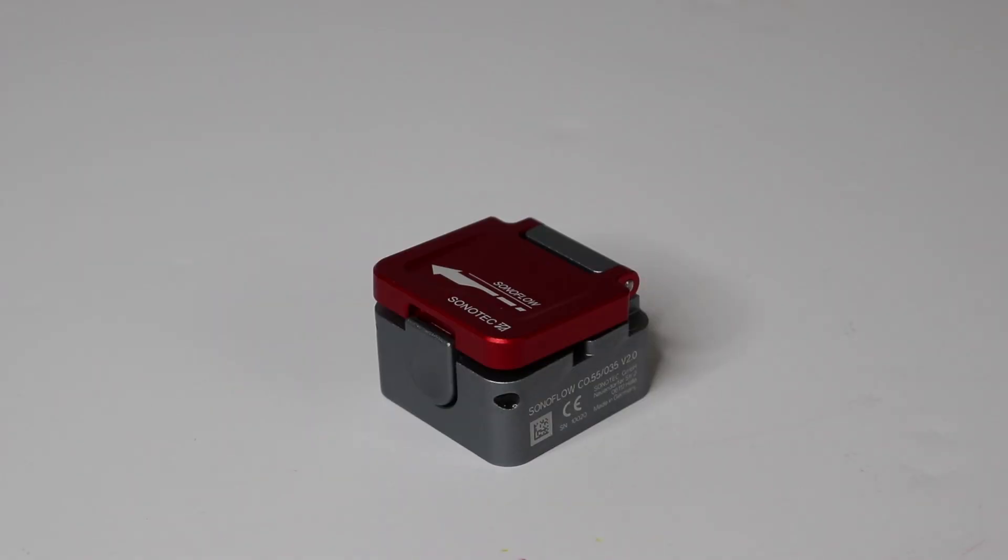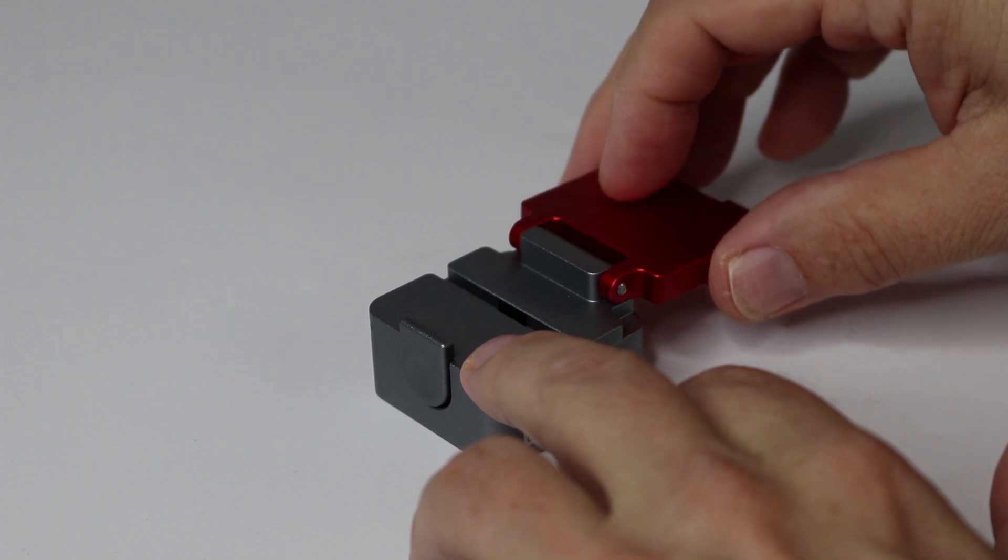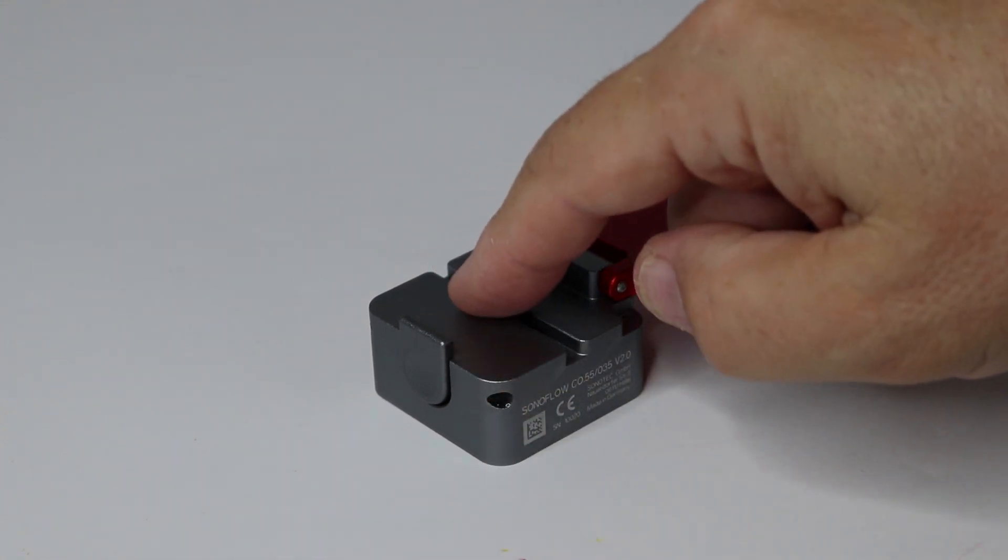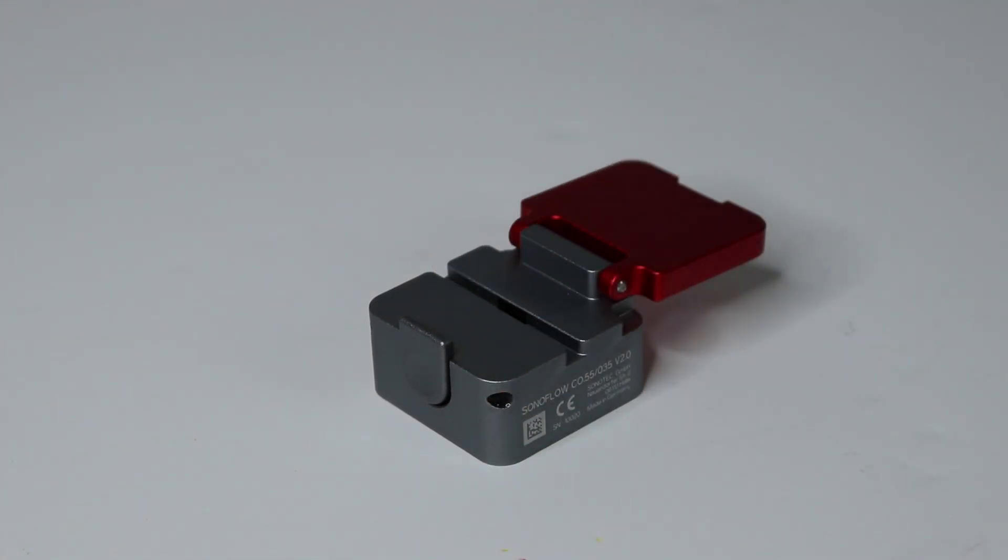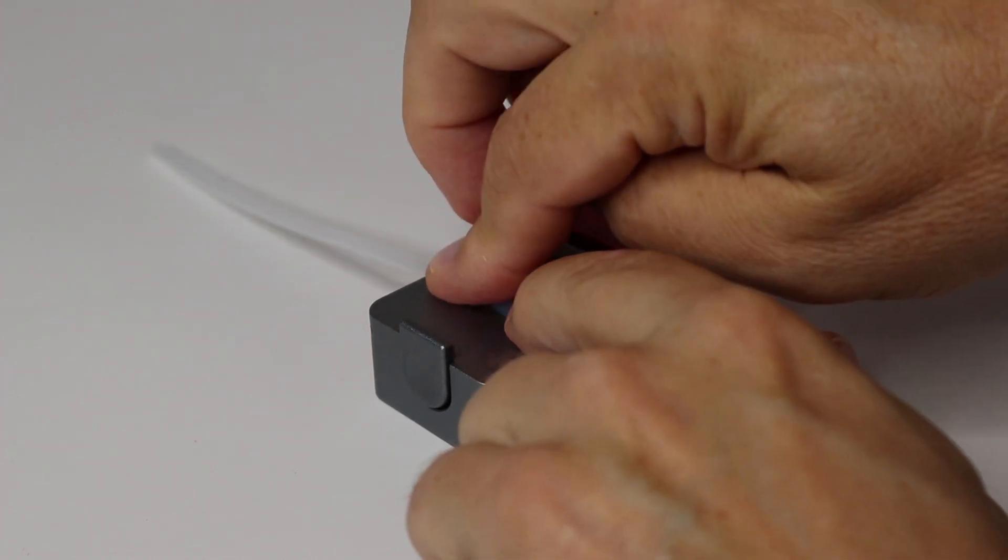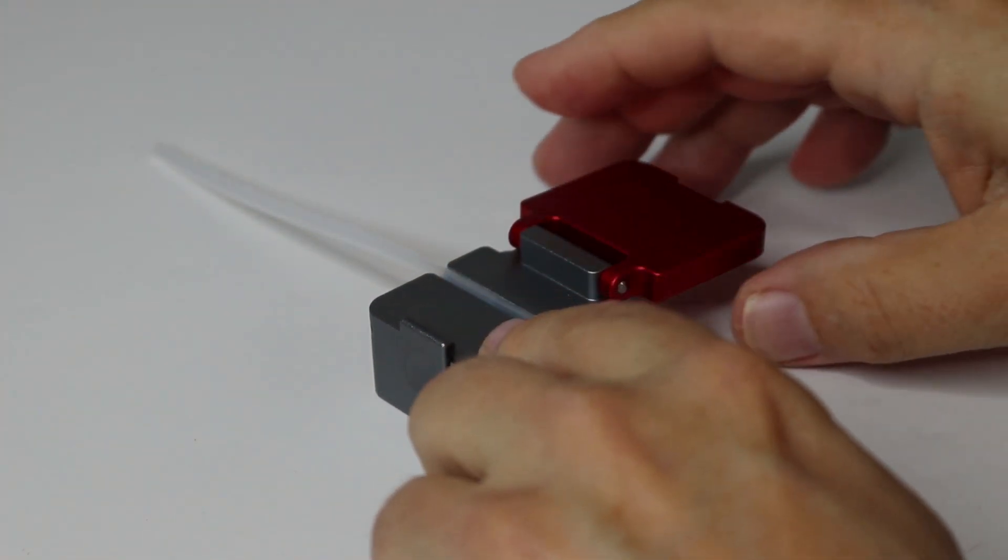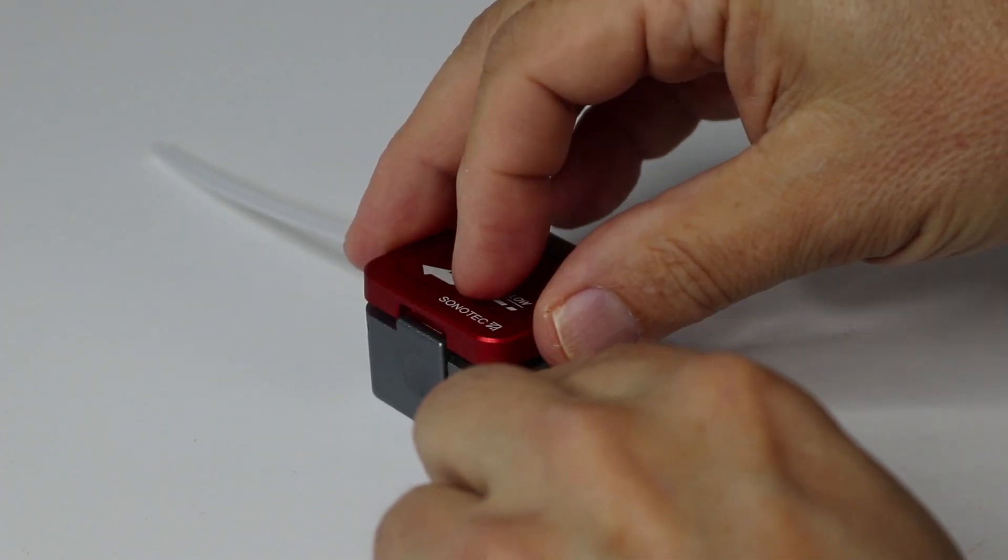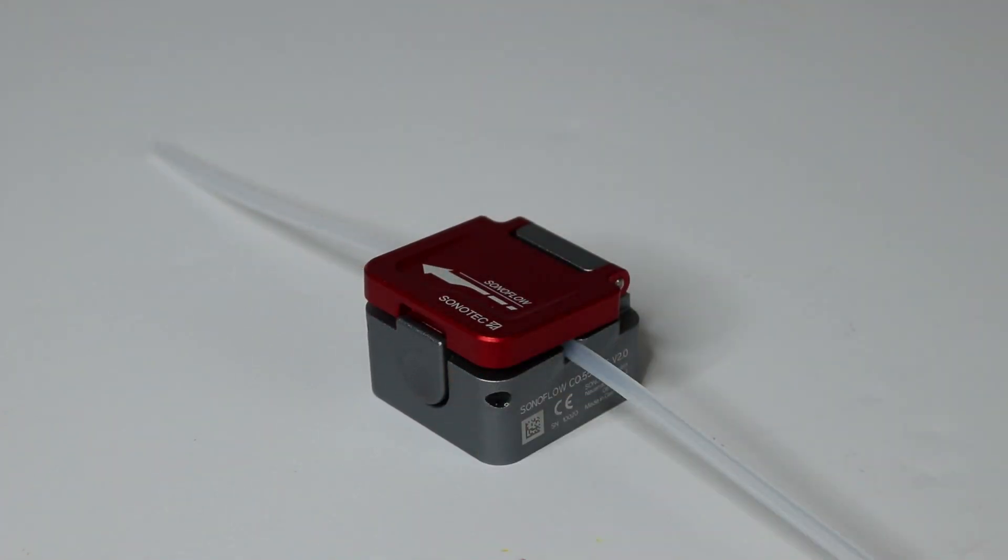So let's get started. You can see the V2 series, and this particular size is for 4mm tubing. You can see this channel right there. The method of operation, of course, is ultrasound. It has an X pattern, and it's a dry coupling, so no coupling is required. What you'll do is you'll take your flexible tube and put that in the channel, just like that, and close your channel, and you're all set to go.